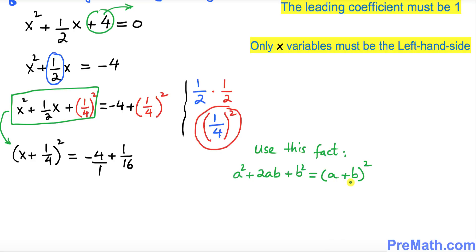So in this case, x corresponds to a and 1 over 4 corresponds to b inside the parentheses, and the positive sign carries over as well.